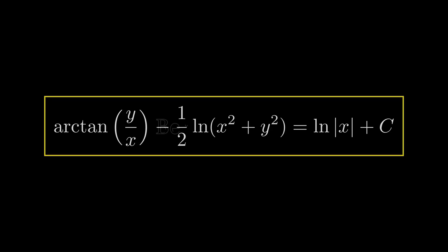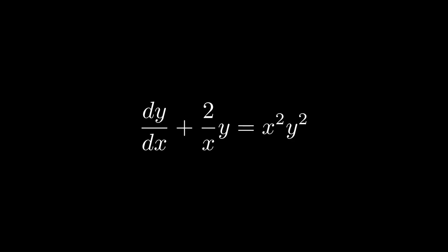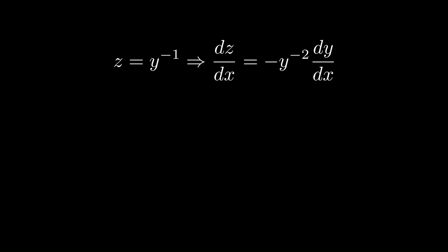Next is the Bernoulli ODE. It has a similar form to the linear ODE, but with y raised to some power on the right-hand side. You substitute z = y^(1 − n), so in this case 1 − 2 = −1, meaning z = y^(−1).